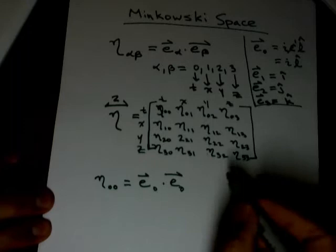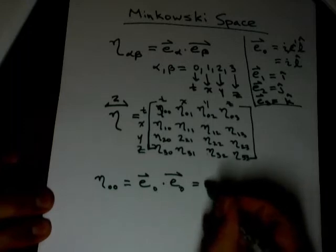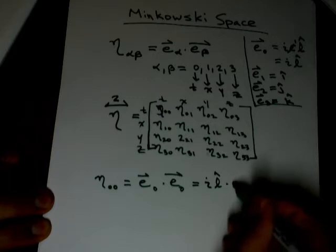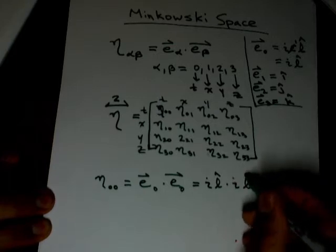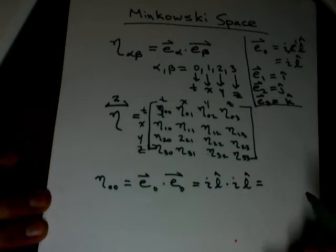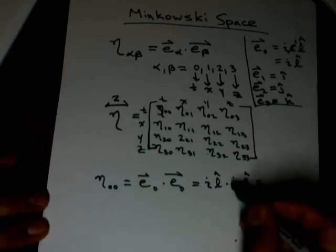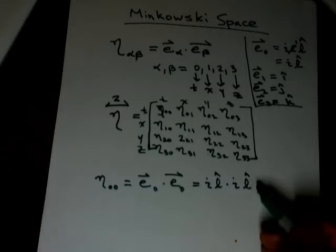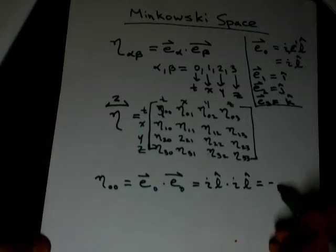So back to here we get imaginary i, imaginary times the unit vector in the time direction, which i times i is minus 1. And these unit vectors are of unit length and they're in the same direction, so that's going to give us a 1. So we get a minus 1.